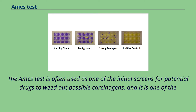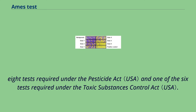The Ames test is often used as one of the initial screens for potential drugs to weed out possible carcinogens, and it is one of the eight tests required under the Pesticide Act and one of the six tests required under the Toxic Substances Control Act.